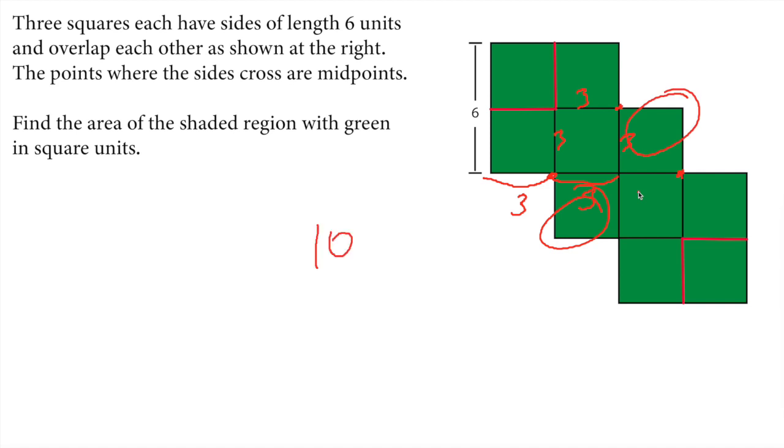So what is the area of one of those squares? As we said here, it is 3 by 3. So this side length right here is 3, and this side length is also 3.